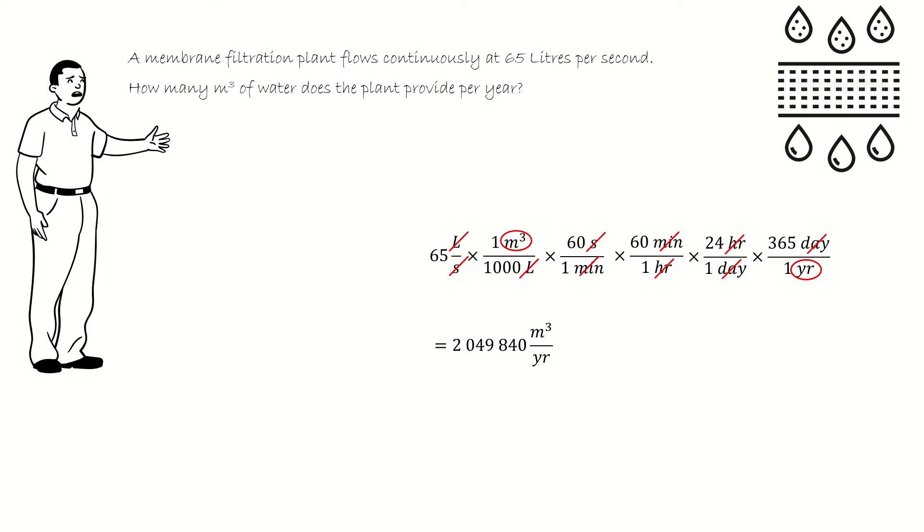Therefore, a plant that continuously flows at 65 liters every second is the same as 2,049,840 cubic meters every year.